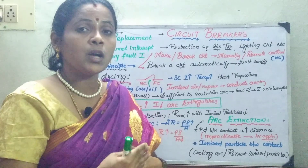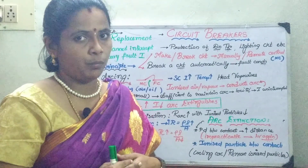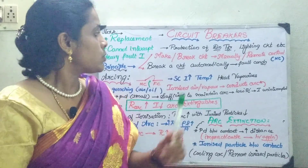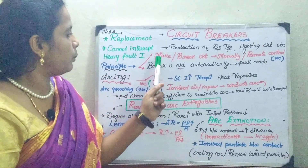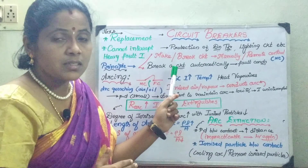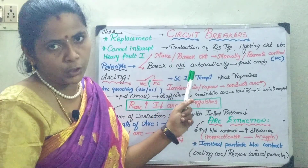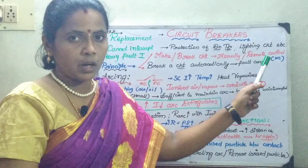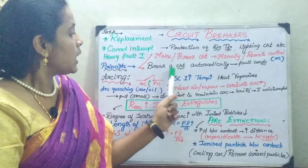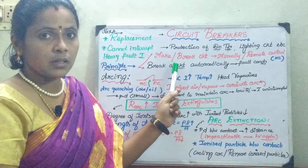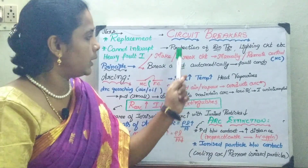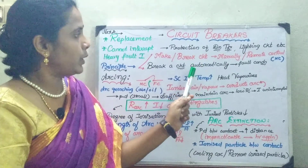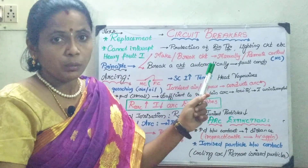Now we will go on to the principle of circuit breakers. What does this circuit breaker do? This circuit breaker is nothing but it either makes the circuit or breaks the circuit. It can do this either manually or by remote control. Whenever it is going to break the circuit under a fault condition, it does so automatically. These are the two main principles of a circuit breaker.